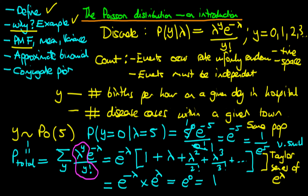In the next video, we're going to derive the mean of a Poisson distribution and state its variance. We're also going to state the conditions under which the Poisson distribution provides an adequate approximation to the binomial distribution, and finish by stating the conjugate prior to a Poisson distribution, which turns out to be a gamma distributed random variable for lambda.